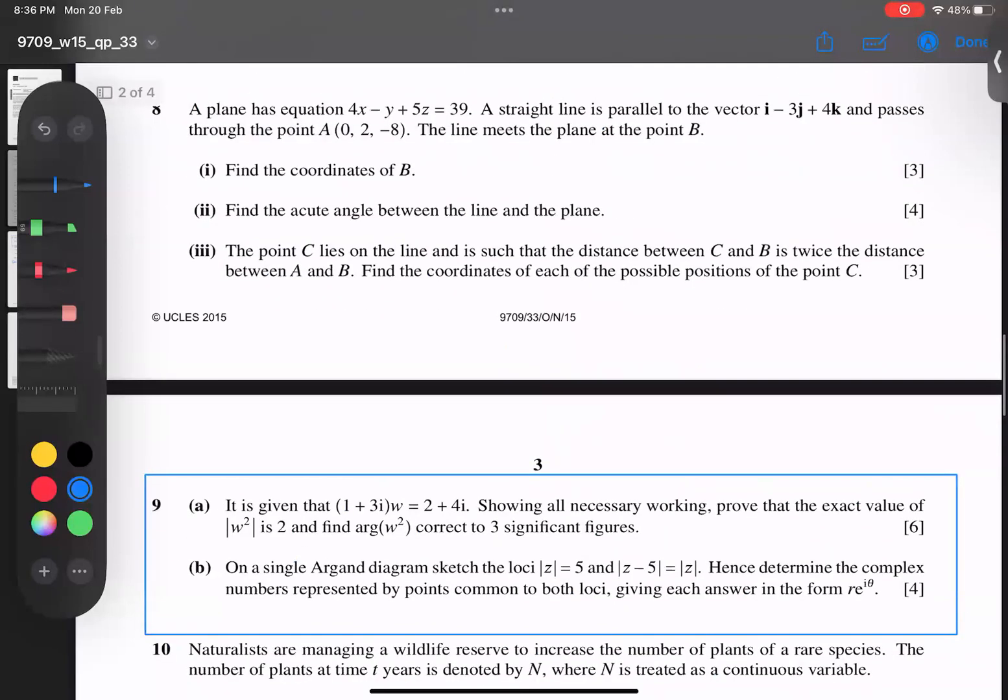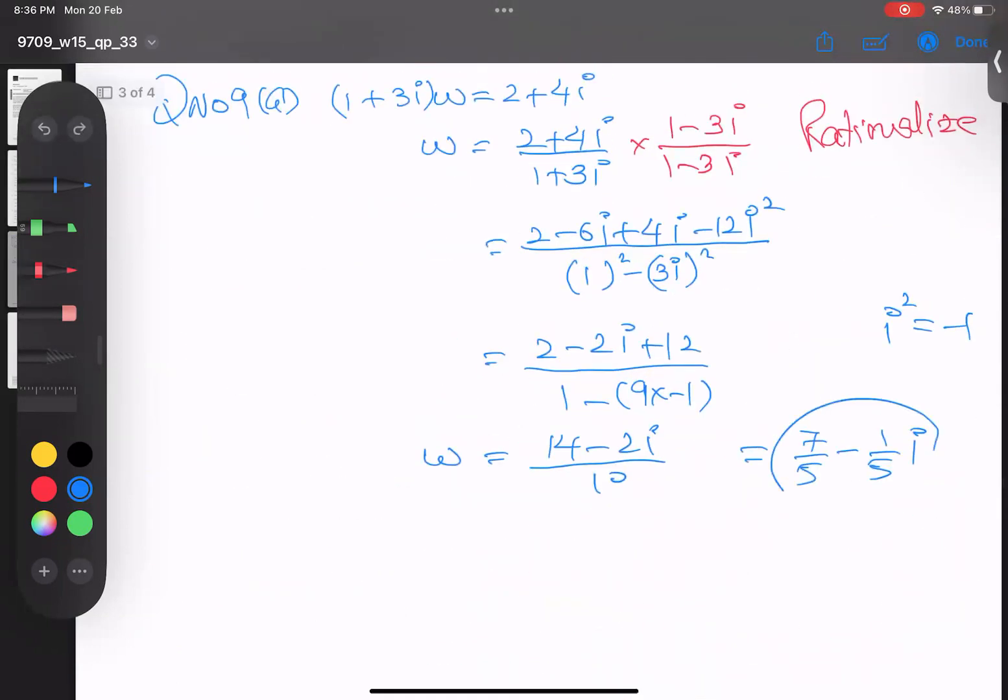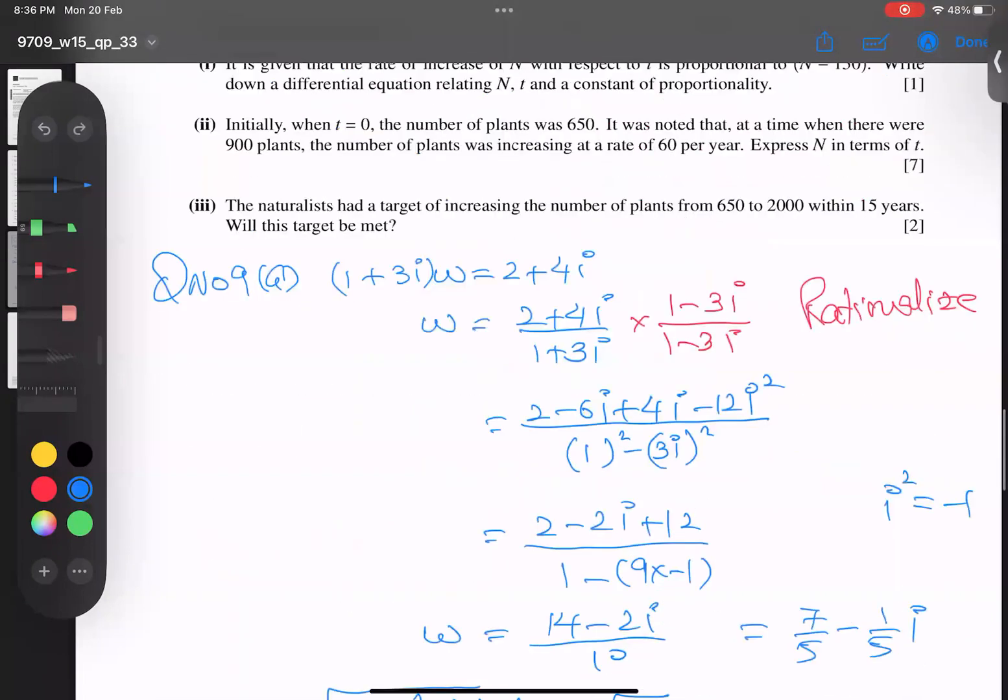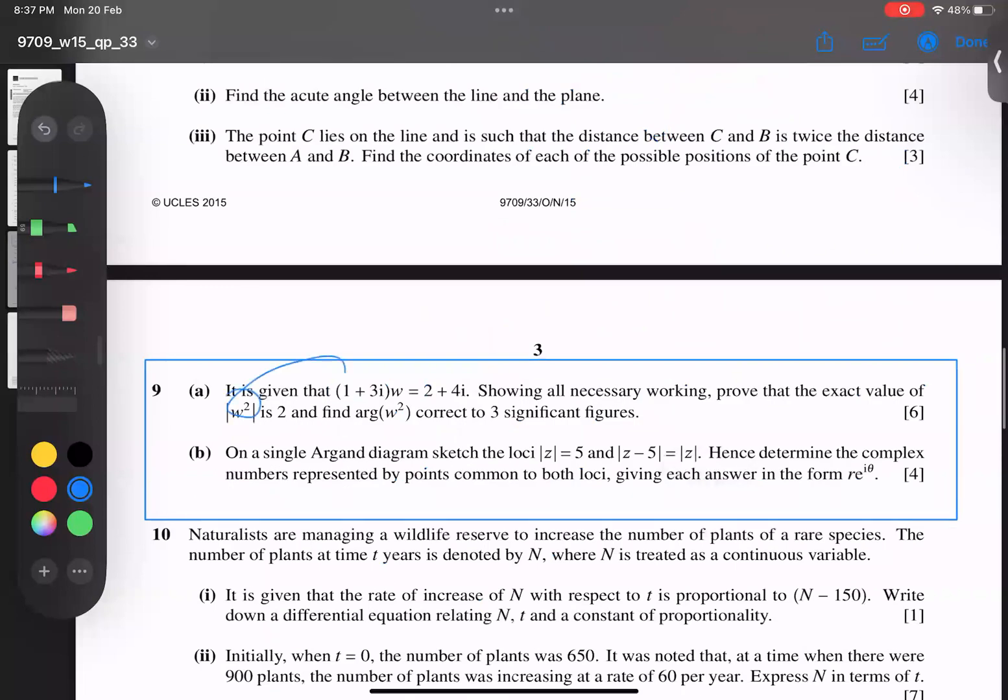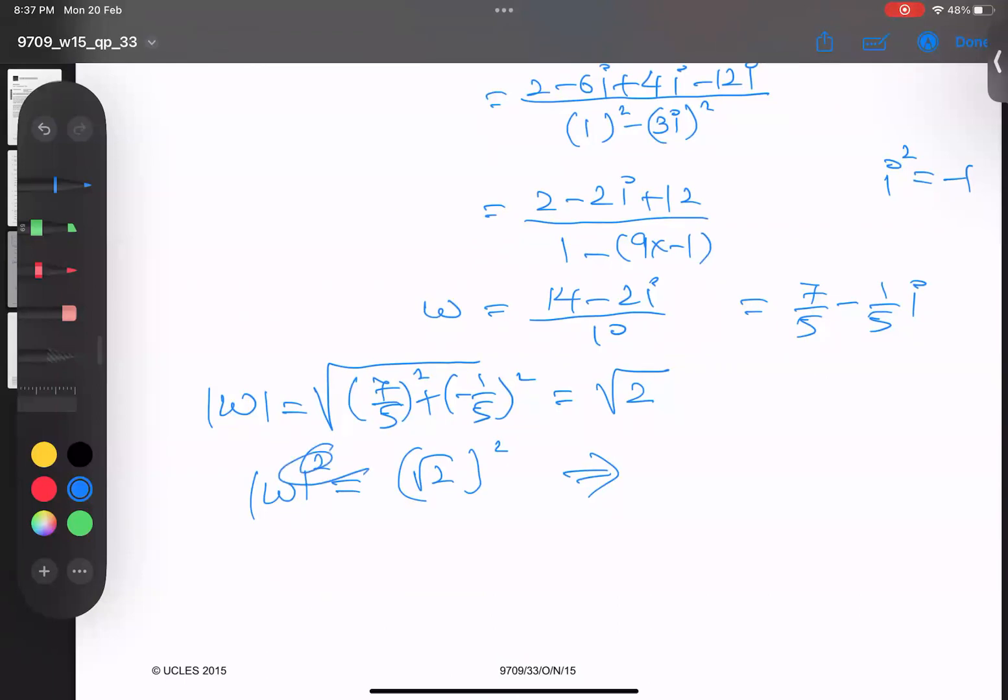He asked to prove that the exact value of |w|² is 2. I have two choices: square w and solve, or find the modulus of w directly. Modulus of w is √[(7/5)² + (1/5)²] = √[49/25 + 1/25] = √[50/25] = √2. So |w|² = (√2)² = 2. First part done.